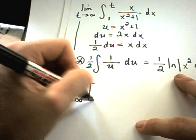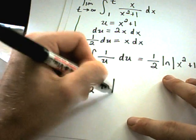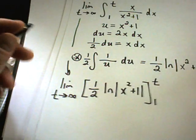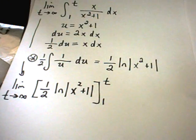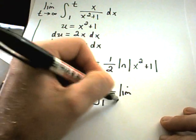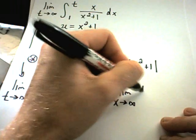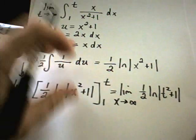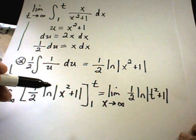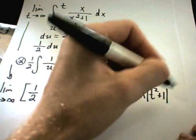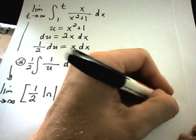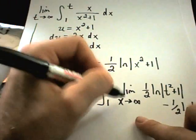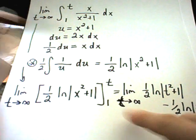So this integral is going to turn into the limit as t goes to infinity of 1 half ln of x squared plus 1, and now I'm evaluating this from 1 to t. So I've got to plug in my limits of integration. I'll have the limit as t goes to infinity of 1 half ln of t squared plus 1, and then I'm plugging in 1, so I'll have minus 1 half ln of 2.